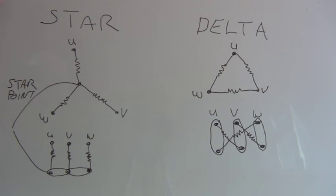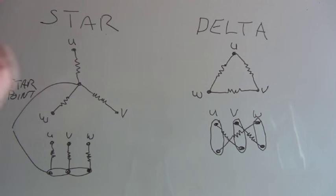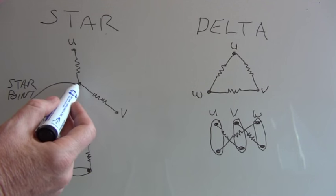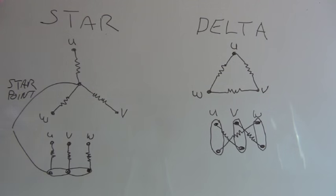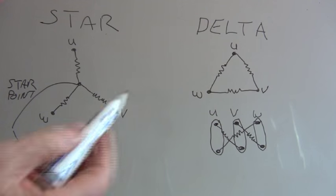When we do the winding balance test, we test if it's the star connection from U to the star point, from V to the star point, and from W to the star point.